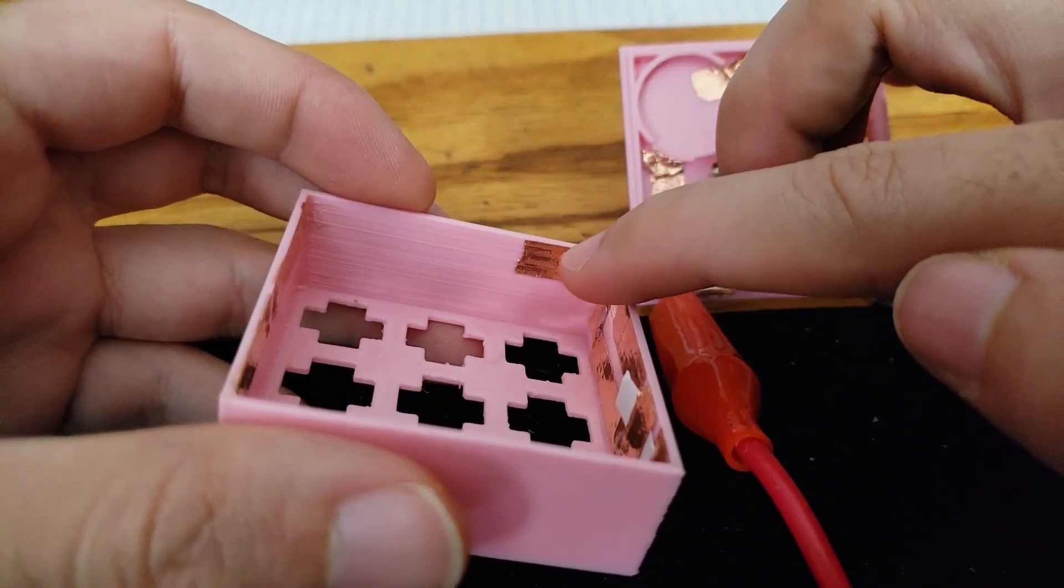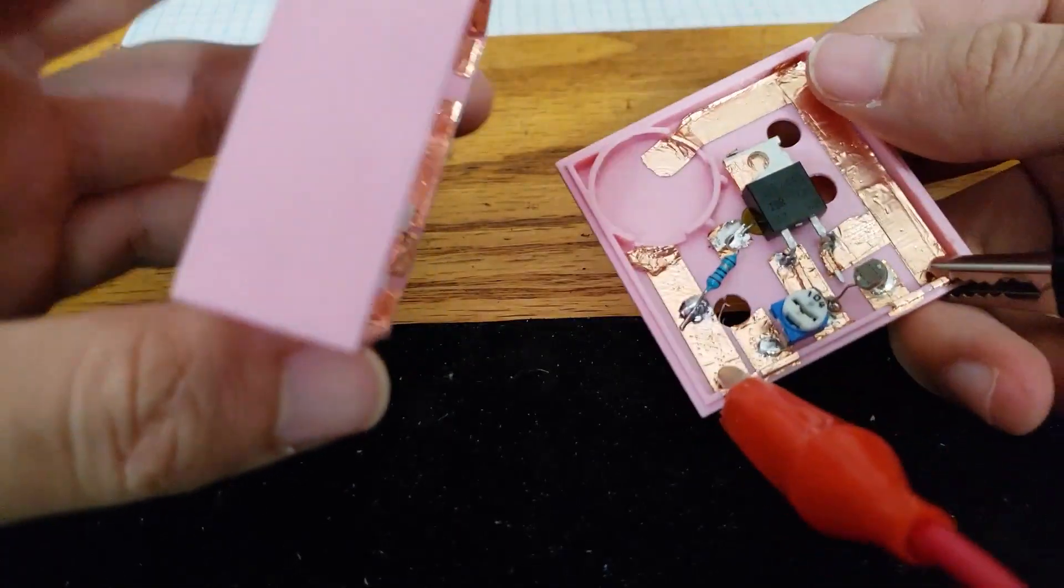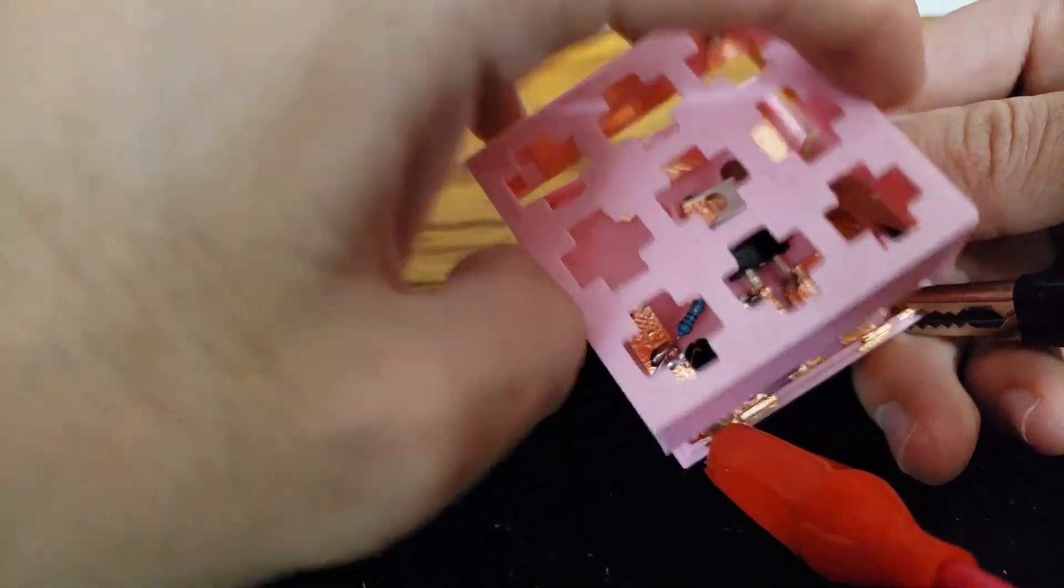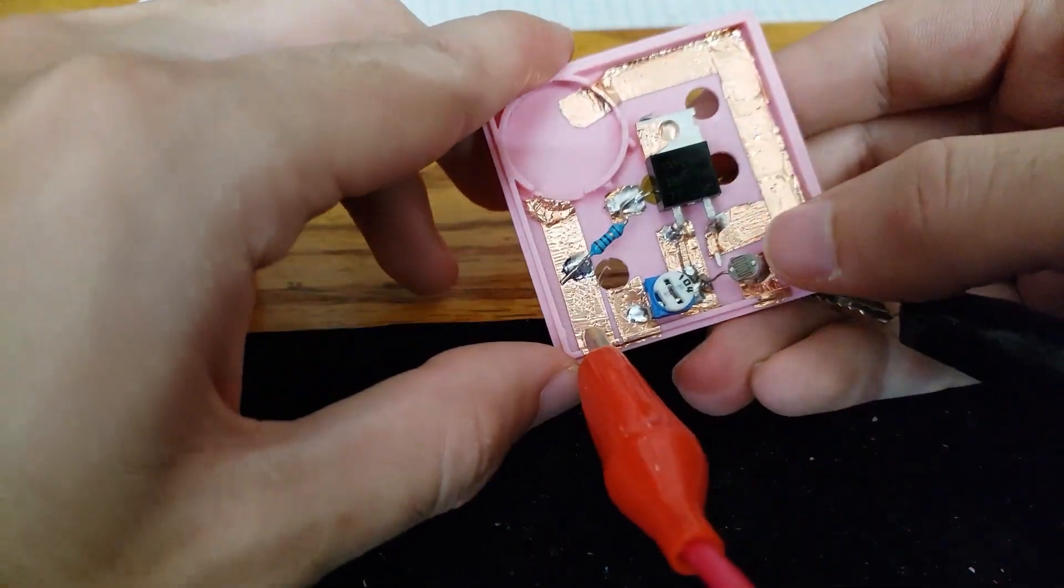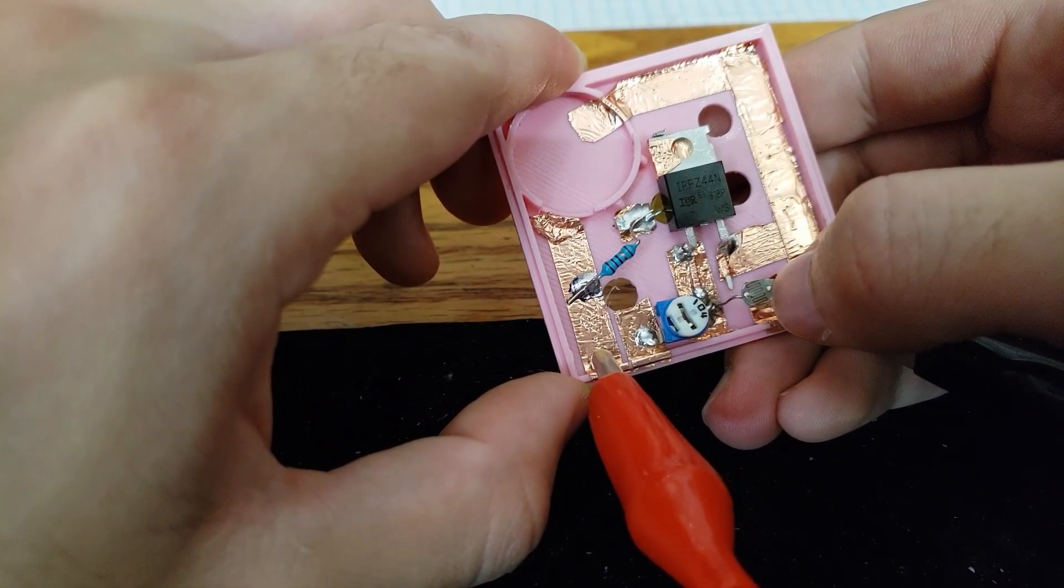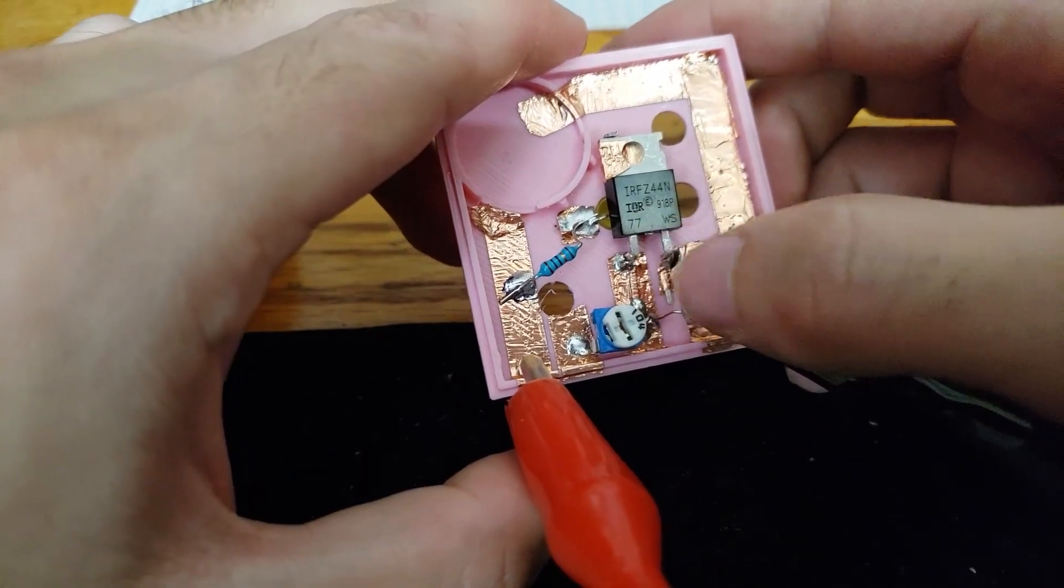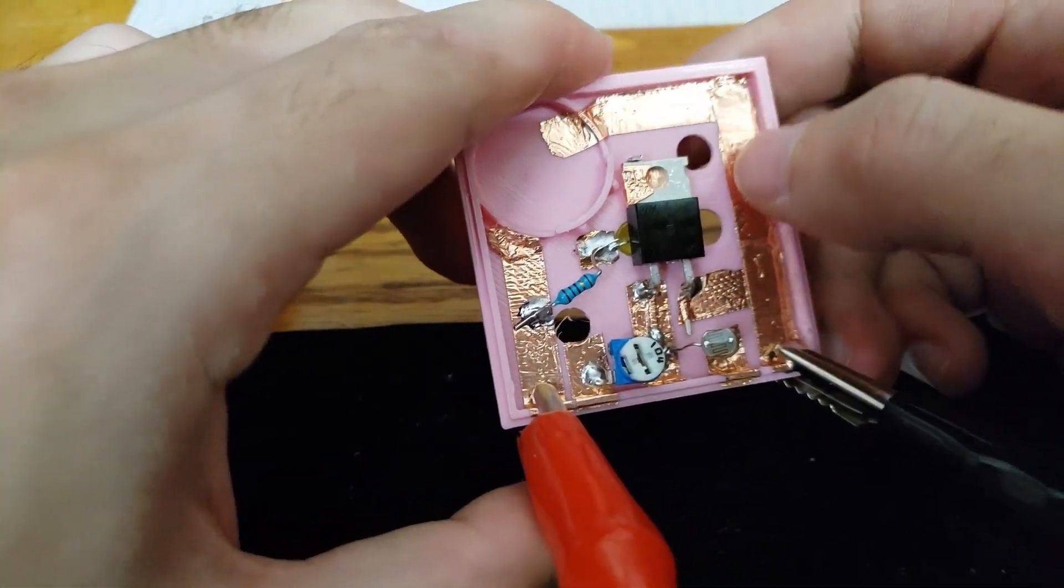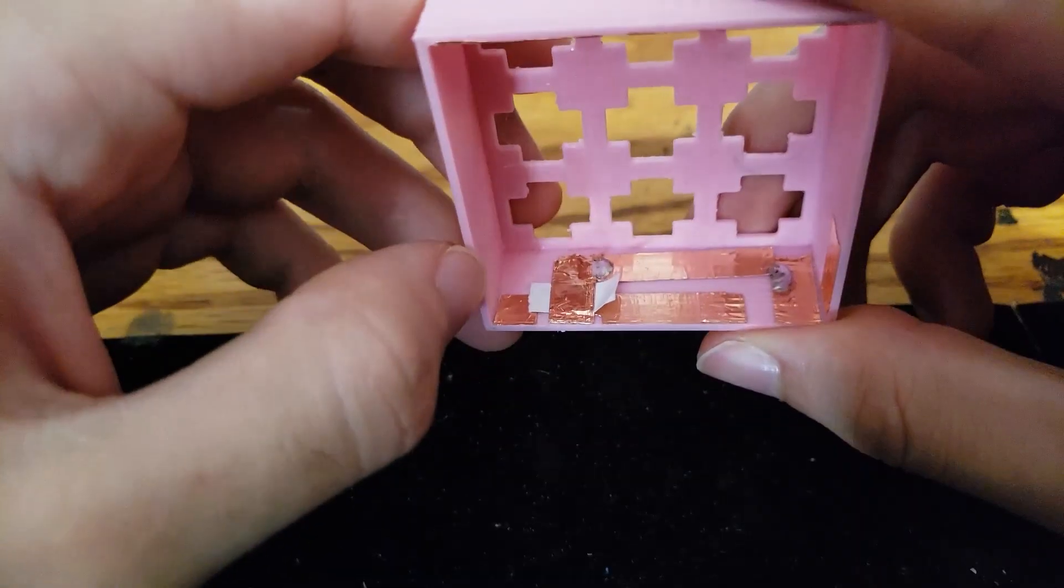I added this little pad here. When flipped and connected, it will connect the gate through the photoresistor down to ground, allowing the gate to be connected to ground, turning off the MOSFET.